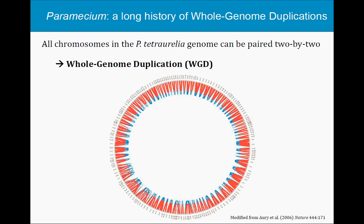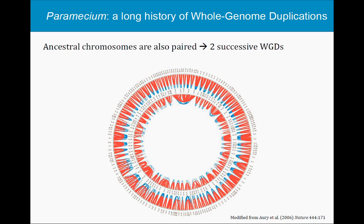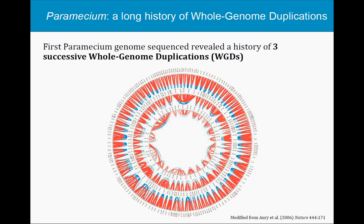The way we interpret this observation is that chromosome 1 and 8 in paramecium derive from a single ancestral chromosome that was duplicated at some point in history. You can do the same thing with all chromosomes in the genome and see that you can pair them two by two, which tells us the entire genome was duplicated. We can reconstruct the ancestral genome by merging these pairs and find evidence for another more ancient whole genome duplication, and then another — arriving at evidence for at least three successive whole genome duplications in the lineage leading to paramecium.